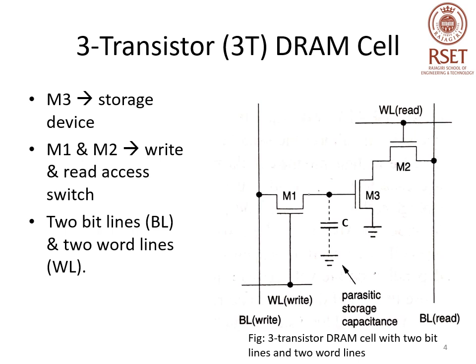During the write operation, the write bit line is enabled and the voltage of the write bit line is passed to the gate of the storage device through transistor M1. During the read operation, the read bit line is discharged to ground through M2 and M3 when the gate voltage of the storage device is high. The three transistor DRAM cell is non-destructive and relatively fast, but it has four lines — two bit lines and two word lines — which increases cell area.